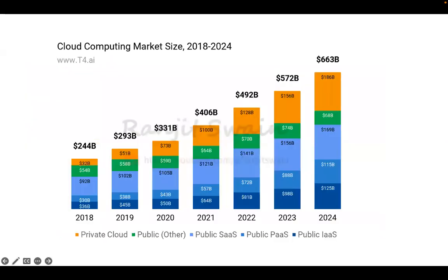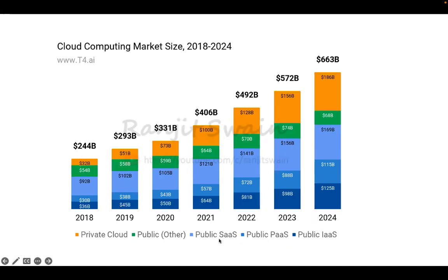Looking at a market chart: the public infrastructure as a service is currently at $125 billion, and by 2024 they expect it to exceed $663 billion. The chart shows the cloud computing market by service type — people are still using private clouds, but most are using public cloud, specifically SaaS, PaaS, and IaaS. Remember those three: Infrastructure as a Service, Platform as a Service, Software as a Service.